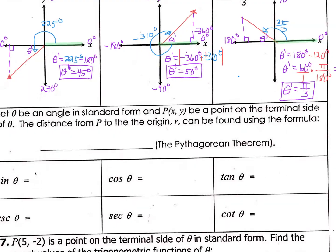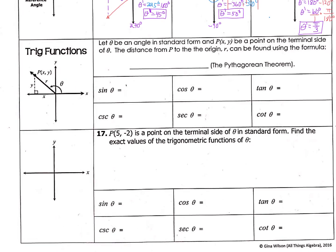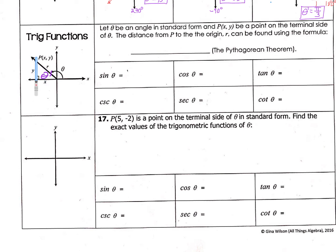So now let's talk about trig functions. We're going to let theta be an angle in standard form going to this point. Here's the radius of this right triangle, and this is your reference angle theta prime. Theta is your actual angle measure, theta prime is your reference angle, and this is whatever the distance is for your radius. There's some point here that has an x and y value — some point on that terminal side. The distance from point P to the origin is going to represent r, which is the hypotenuse of that triangle.